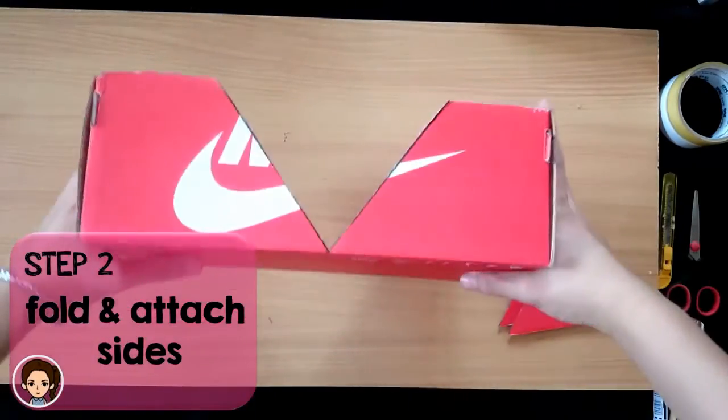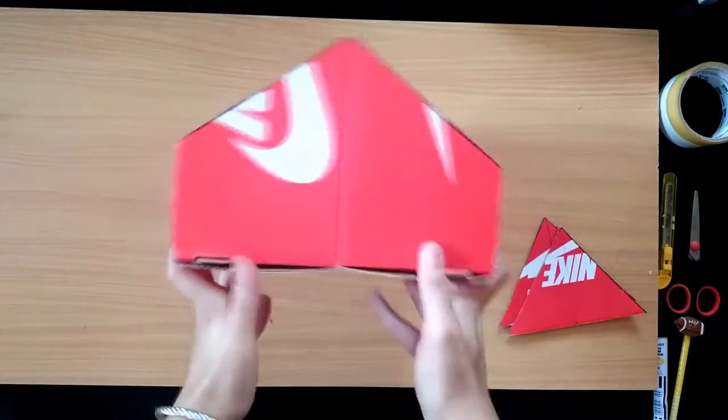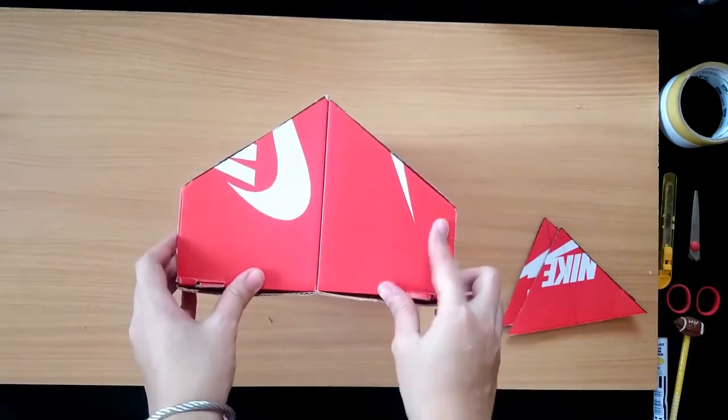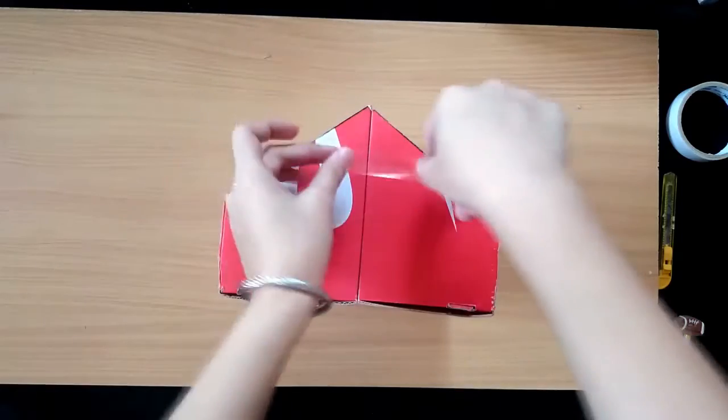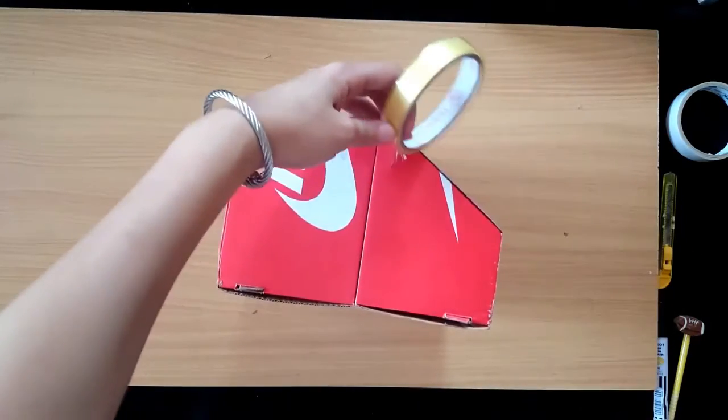Step 2: Fold and attach sides. Use scotch tape to secure all the sides. You may also use a glue gun for this step.